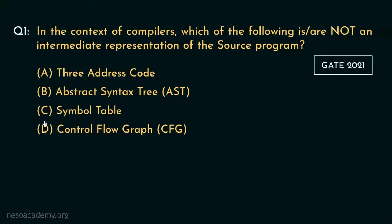Coming to option C, we know symbol table is a data structure which stores information about various entities of the source code. So clearly it is not an intermediate representation. But before selecting C as our option, let's take a look at the last option as well.